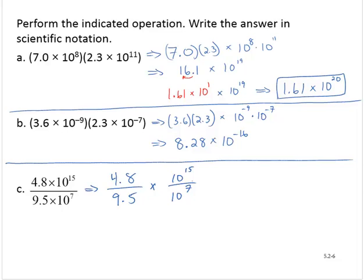Now using a calculator, 4.8 divided by 9.5 gives me approximately 0.505. And then I'd have, using the quotient rule for exponents, times 10 to the 8th.